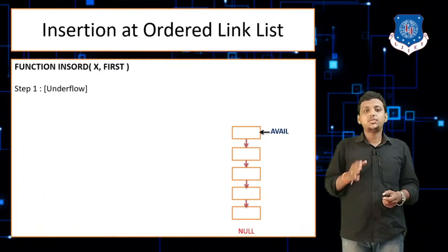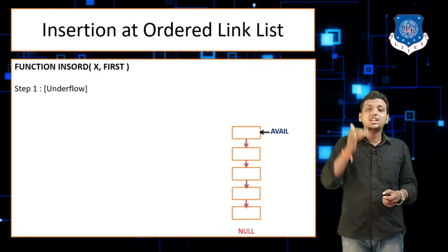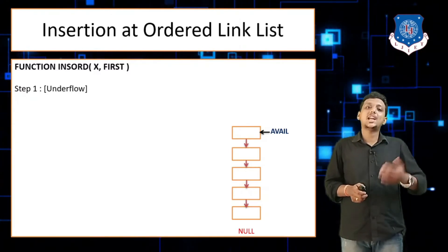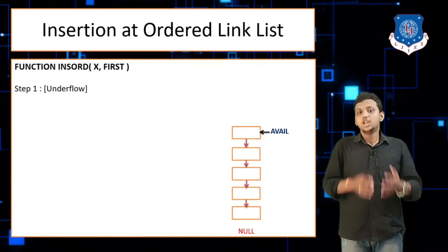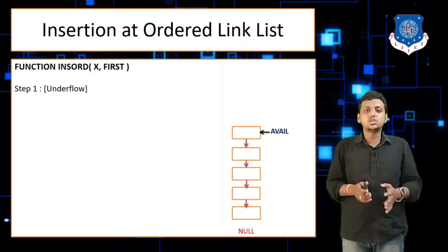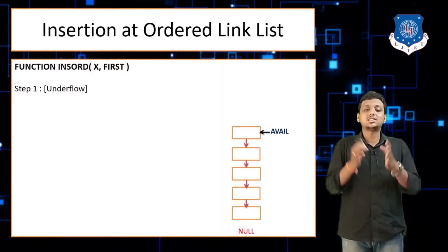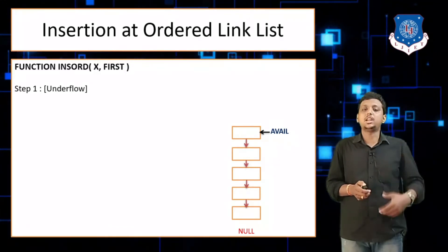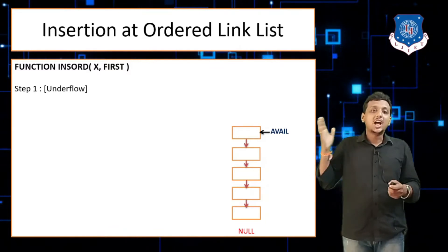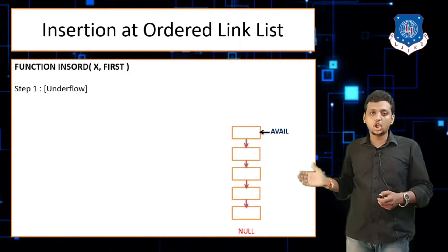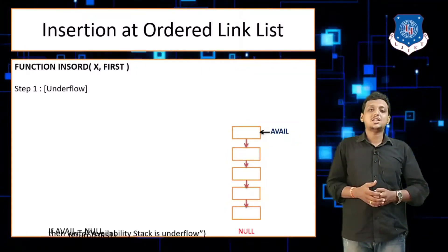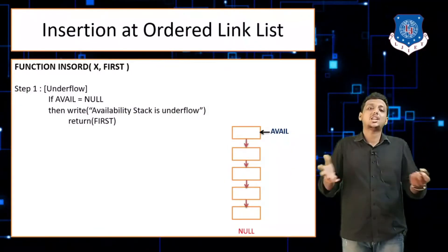We check the underflow of the availability stack: if avail is equal to null, the availability stack is underflow. I have already explained the availability stack in previous lectures — check the YouTube channel for those videos. So the first condition is: if avail is equal to null, then the availability stack is underflow and you cannot insert a new node.